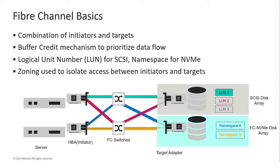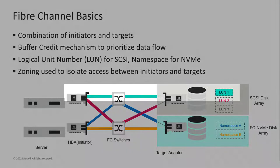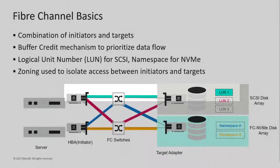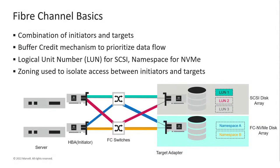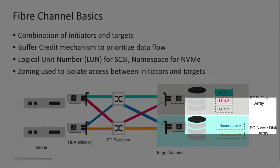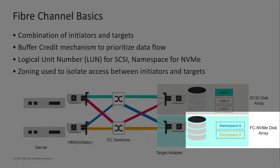Data integrity is maintained by what is called zoning. The path between a host server and a storage entity is defined by zones — only those devices in the same zone can communicate with each other. For SCSI, zoning is done between the host and the disk partition, also known as a logical unit number or LUN. For NVMe, the disk partition is known as a namespace.